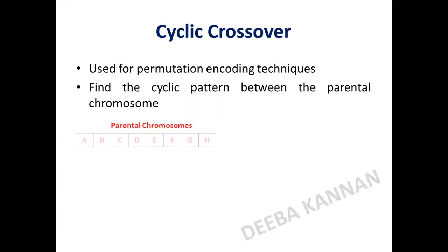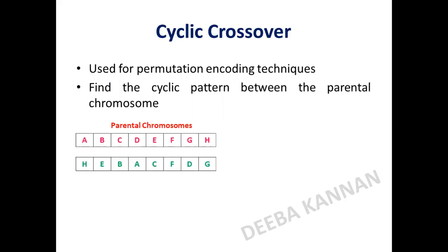We take two parental chromosomes and find the cyclic pattern within them. For example, with parent one and parent two: starting at gene 'a', the corresponding gene in parent two is 'h'; for 'h' it is 'g'; for 'g' it is 'd'; and for 'd' it is back to 'a'. So a → h → g → d → a forms a cyclic pattern.